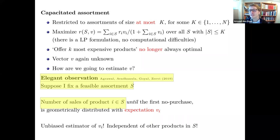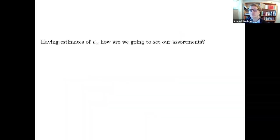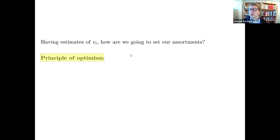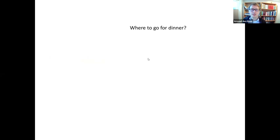This gives an unbiased estimator of vᵢ: fix your assortment until you see a no-purchase, count how often product i was sold, and that's your estimate. Repeat with another assortment. It may not be the lowest-variance estimator, but in terms of elegance it's hard to beat.